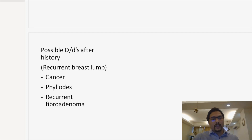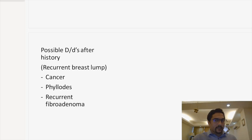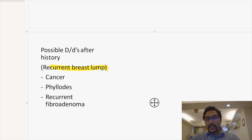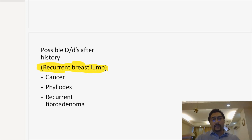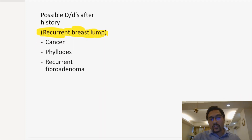Whenever you're presenting a case in your college, your examiner is going to ask your impression after the history. The possible differential diagnoses after the history: the key thing here is it is a recurrent breast lump. A recurrent breast lump can either be cancer, a phyllodes tumor, or a recurrent fibroadenoma, which can occur in around 7 to 8% of patients.